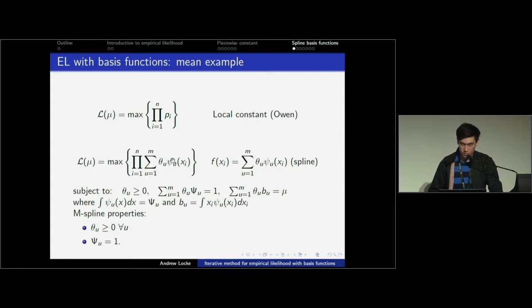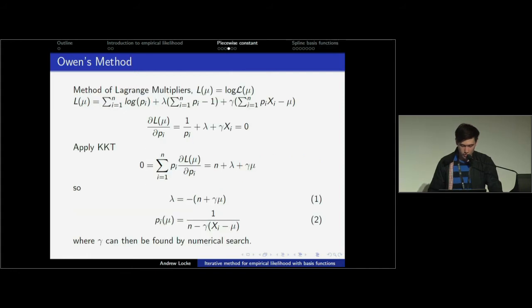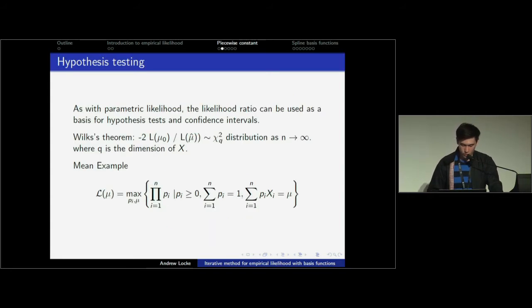This is for the mean example. I might just mention that here they haven't used augmented Lagrangian method yet, but applying that can help enforce the constraints here that sum of PIs equals one.